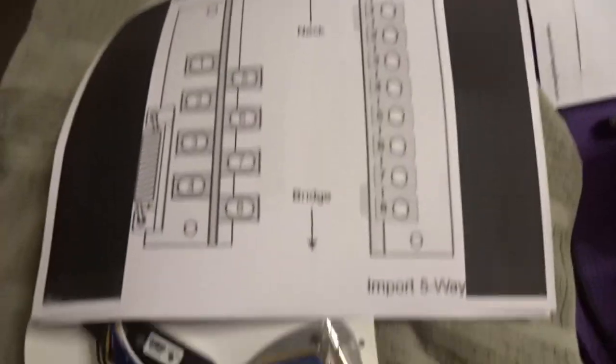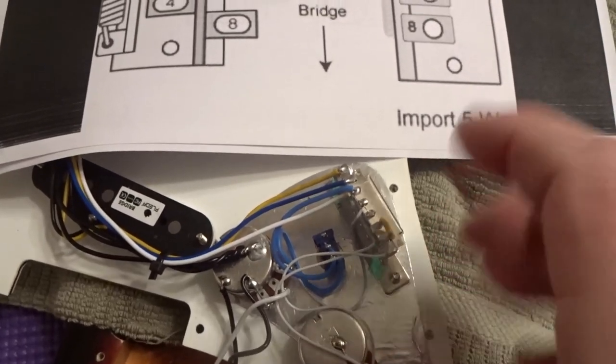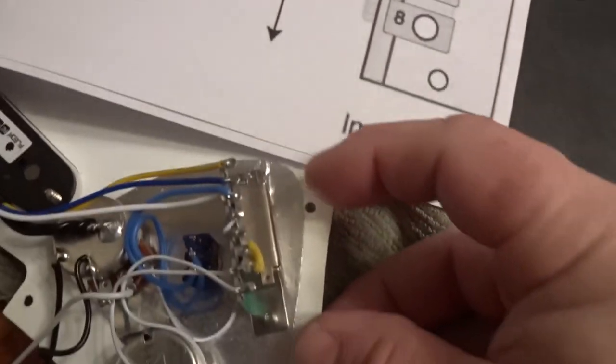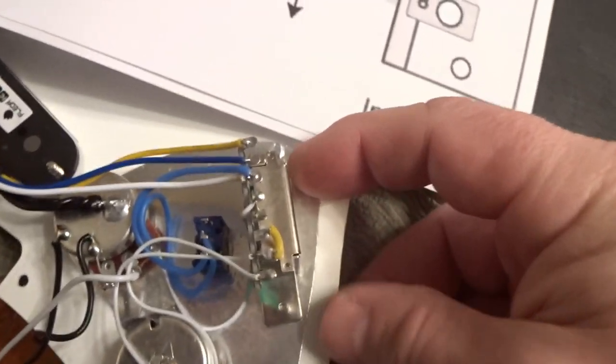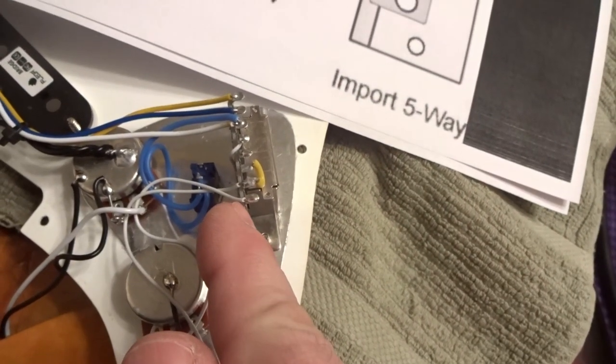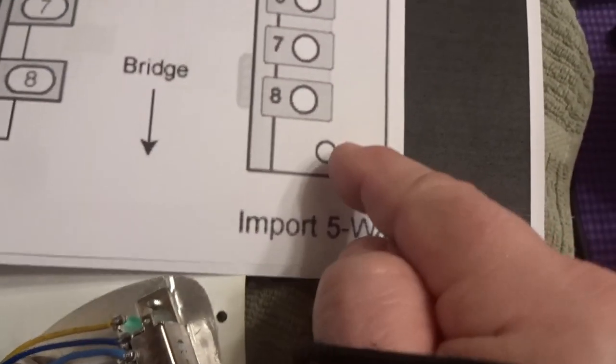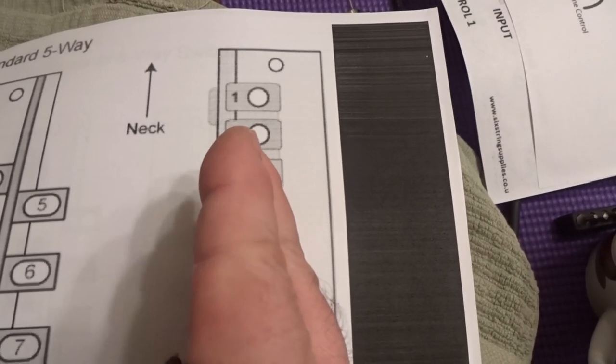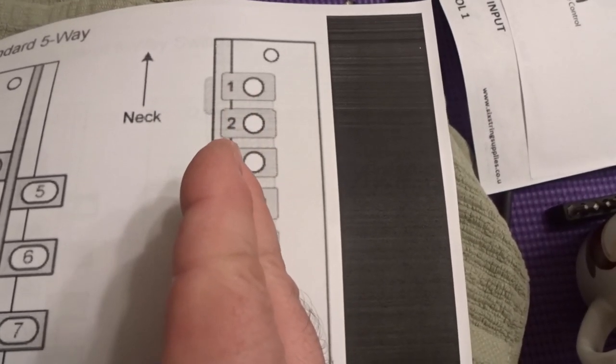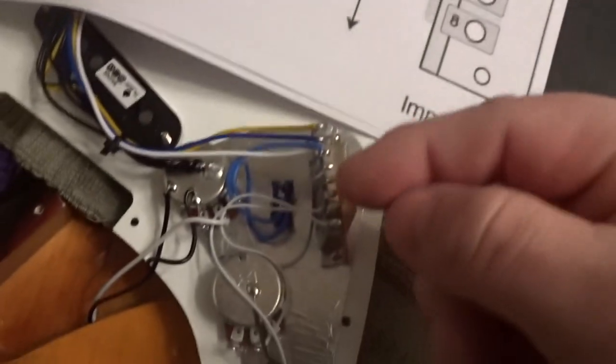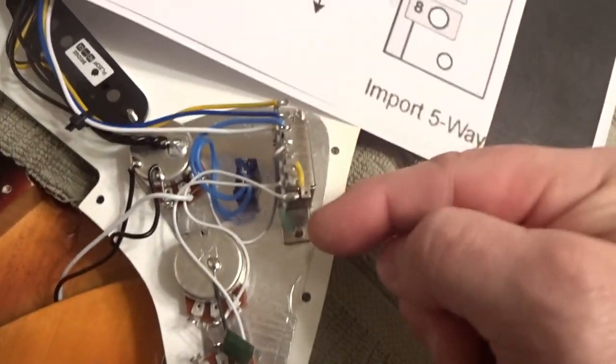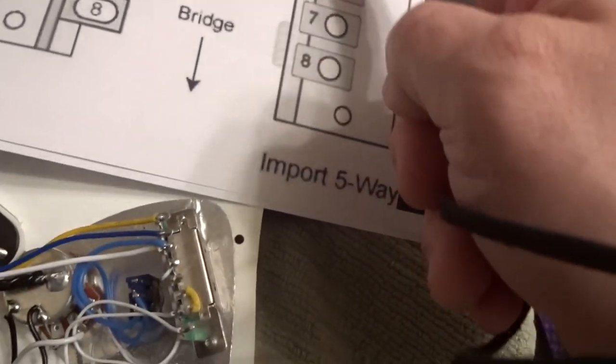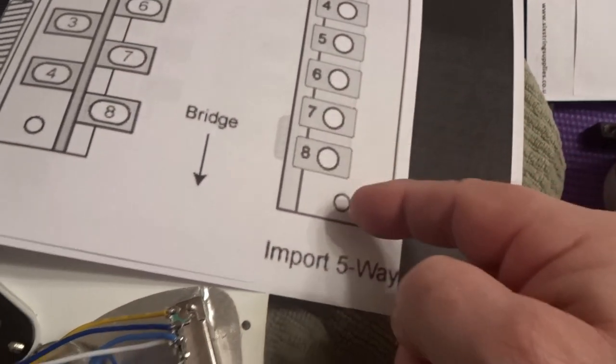Alright, so we got the switch there, the cover off, the scratch plate off. And if you look here you can see the circuit board is here and your screws are here. And if we look over at this, this would be your circuit board part on the import switch and the screws would be there. So going from this lug all the way down one, two, three, four, and then five, six, seven, eight.